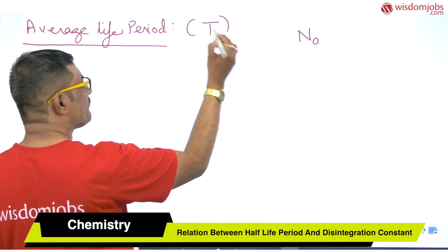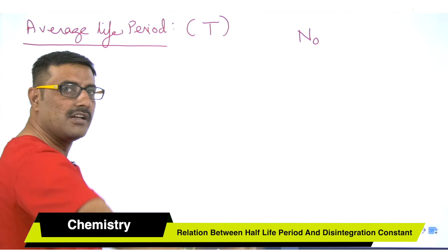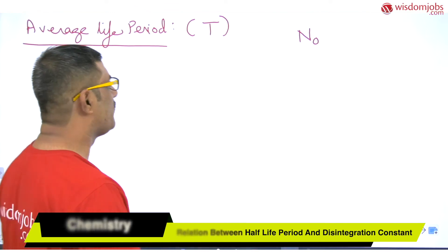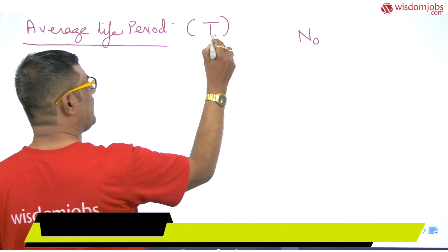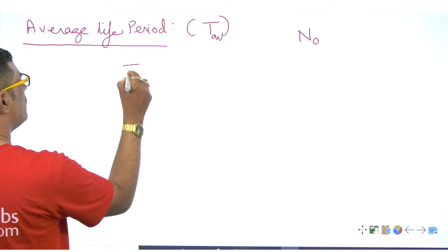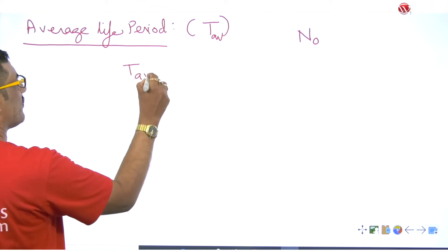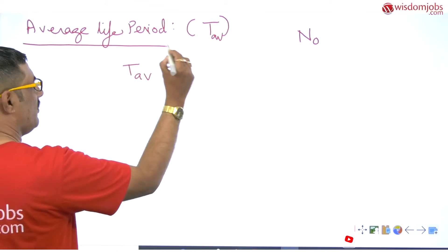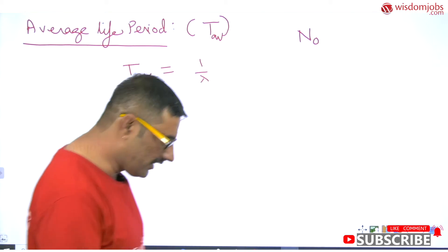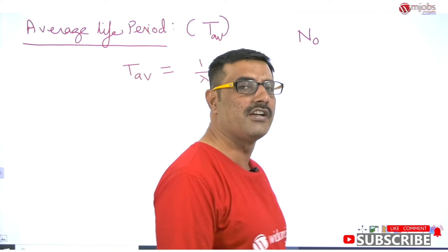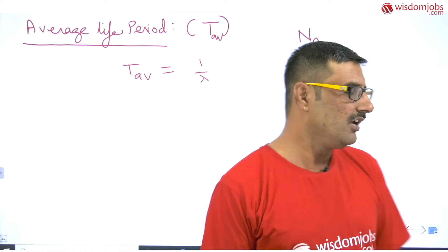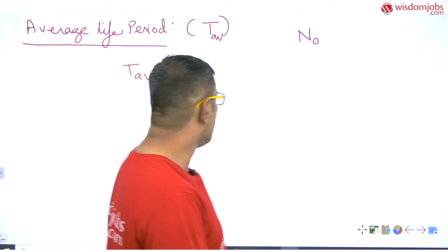The average lifetime is denoted by capital T, or in some textbooks as T-av. T-av is simply equal to one over lambda — that is, the inverse of the disintegration constant gives you the average lifetime.